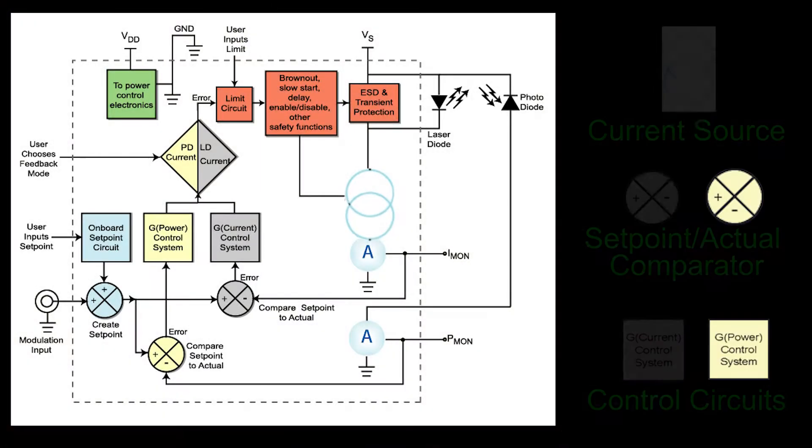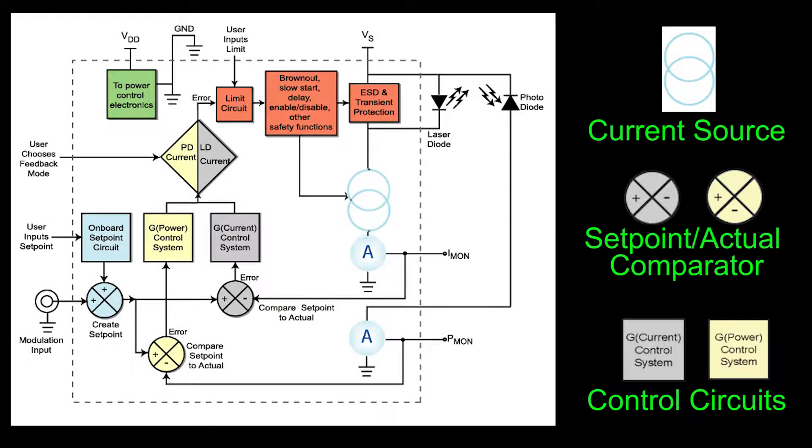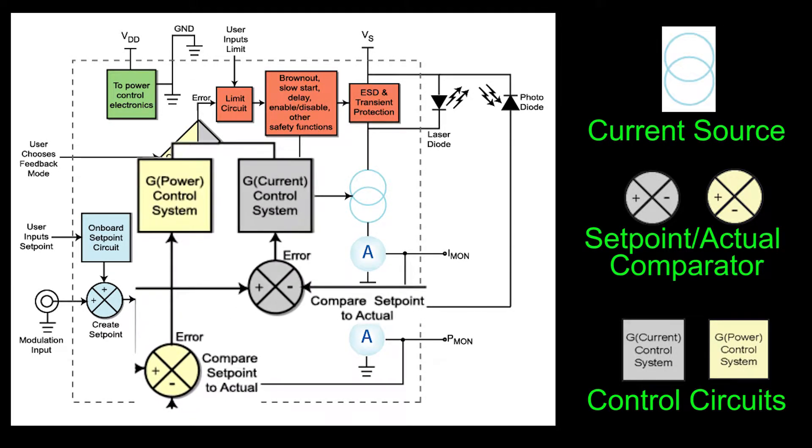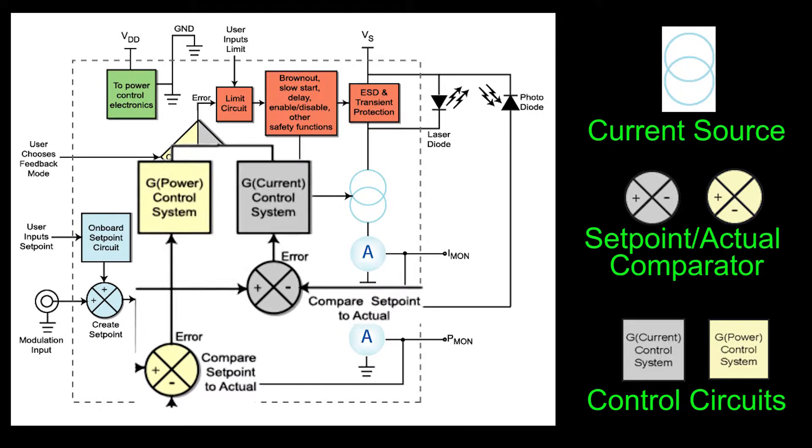These drivers are linear current sources. They deliver the current commanded by the set point. The current source continually monitors the actual output current, compares it to the set point, and adjusts the current if there is a difference between the two signals.